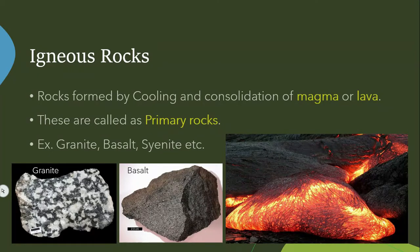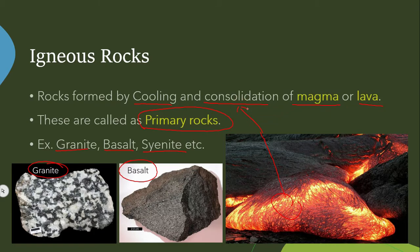First, Igneous Rocks. Igneous Rocks are formed by cooling and consolidation of Magma or Lava. When Magma or Lava cools and solidifies, that solid material is nothing but Igneous Rock. These are considered as Primary Rocks because they are directly formed from liquid Magma or liquid Lava. Examples include Granite, Basalt, and Syenite. You can see the white color Granite, the Basalt, and Magma — when this liquid cools and consolidates it becomes Igneous Rock.